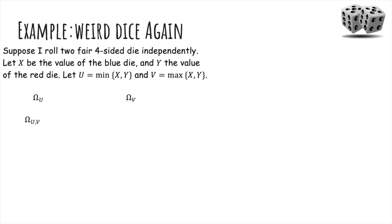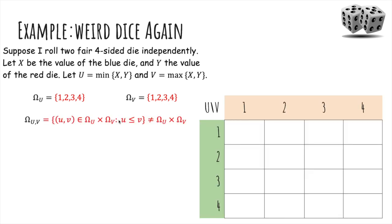Now let U be the min of the two die rolls and V be the max of the two die rolls. It's possible that the min is anywhere from 1 to 4 and same for the max. But the joint range (U,V) requires that U is always less than or equal to V because the min has to be less than or equal to the max. And so this joint range is actually not equal to the product because (4,1) is not possible, for example.